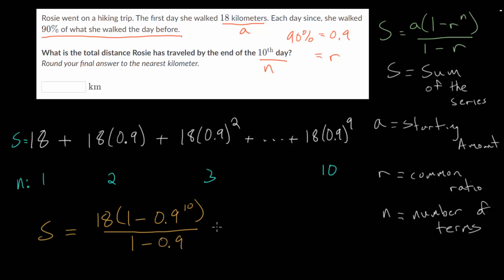So we can simplify this a little bit and then use the calculator. So this will be 0.1. So you have 18 divided by 0.1 multiplied by 1 minus 0.9 to the 10th. And this is 18 divided by a 10th, or we're essentially multiplying by 10. So that's 180 multiplied by 1 minus 0.9 to the 10th power.